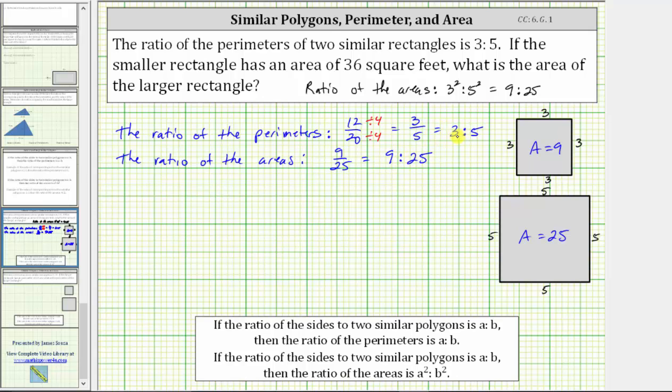And notice how if we start with the ratio of the perimeters, which is the same as the ratio of the corresponding sides, and then we square the three and we square the five, we do get the ratio of nine to 25, which does give us the ratio of the areas.